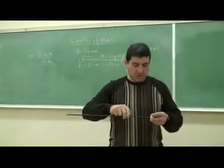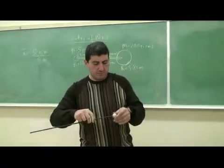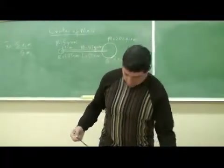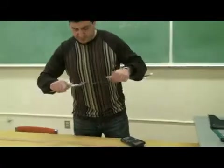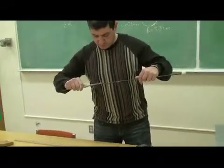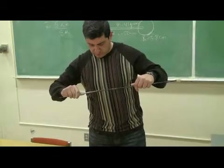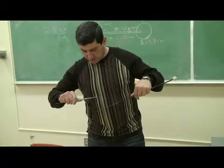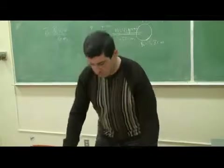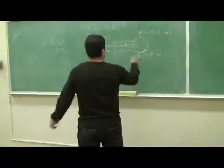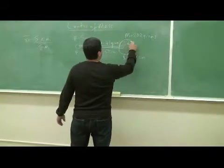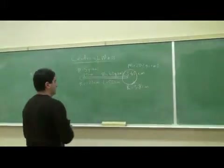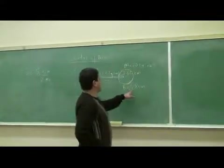I'll screw this in now. Then, how much of the rod goes into the bigger sphere? It comes out to be 3.65 centimeters — almost equal to the radius of the large sphere itself.